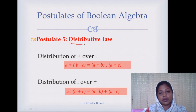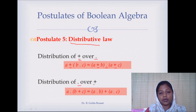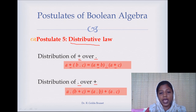Next is the distributive law. The distribution of OR over AND is: A OR (B AND C) = (A OR B) AND (A OR C). We call this the distribution of OR over AND because originally there is only one OR operation, and here we have distributed it — we now have two OR operations over the AND operation. And the distribution of AND over OR is: A AND (B OR C) = (A AND B) OR (A AND C).